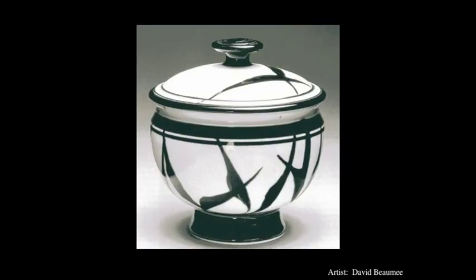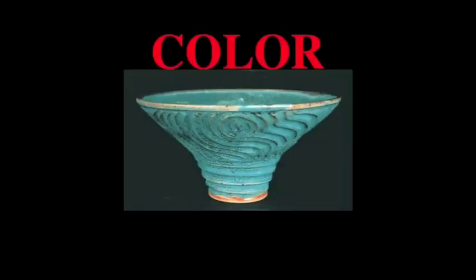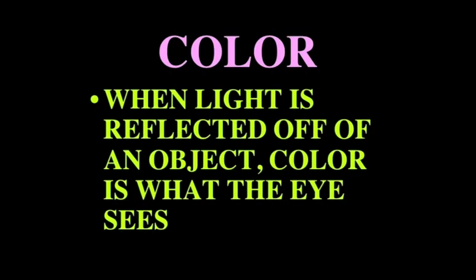This one has great value contrast too. This wasn't done through over glaze — this was glazed with a clear or white glaze over a light-colored clay body, and then the black marks, the bands, and the little brush strokes are all done with black stain on top of probably a white glaze. The definition of color is kind of scientific: when light is reflected off of an object, color is what the eye sees.